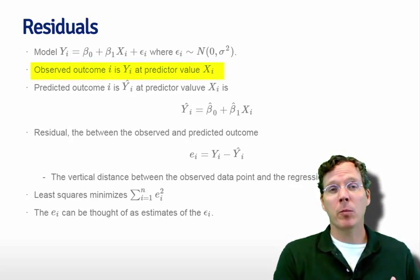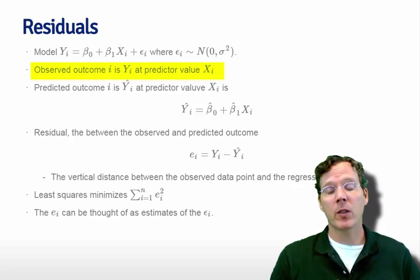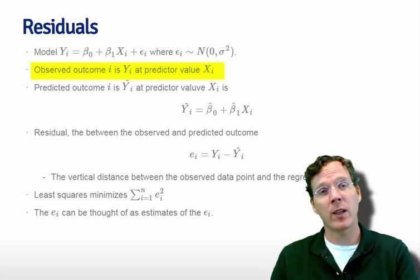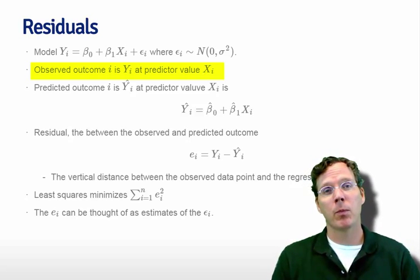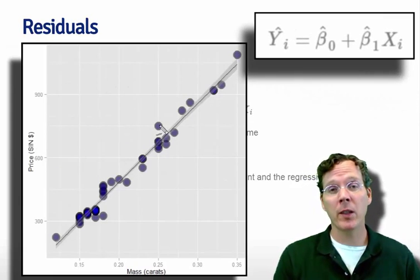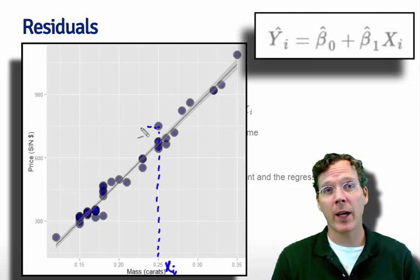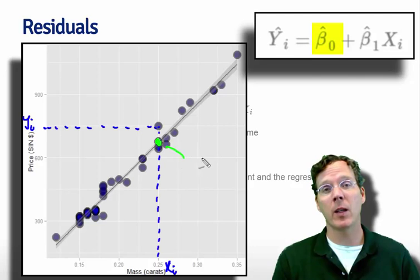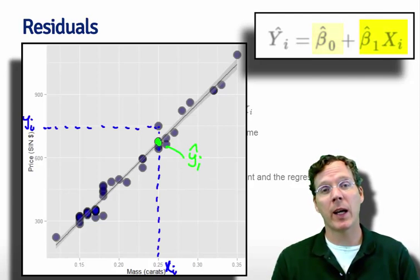Remember, the outcome is Yi for predictor value Xi at that specific index i. So Yi is a price, Xi is a mass. The point on the line corresponding to Xi is Ŷi. We can figure out Ŷi by just plugging in β̂0 + β̂1 times Xi.